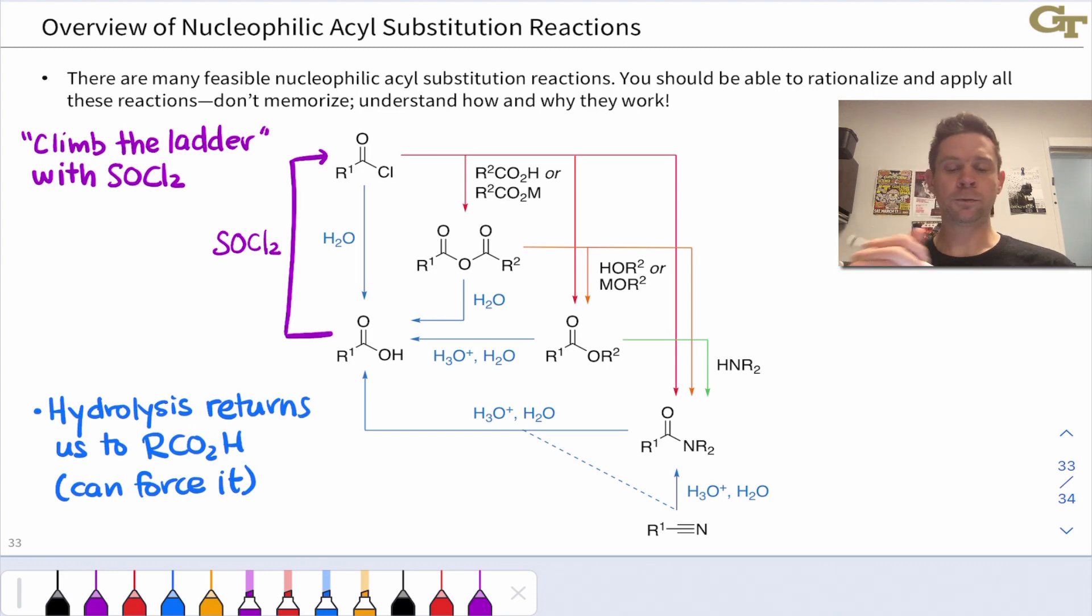And so in the overview here, starting with an acyl chloride, we can go down to almost anything. We can go to a carboxylic acid, anhydride, ester, amide. And so if you want to make some carboxylic acid derivatives, starting with the corresponding acyl chloride is a good way to go.